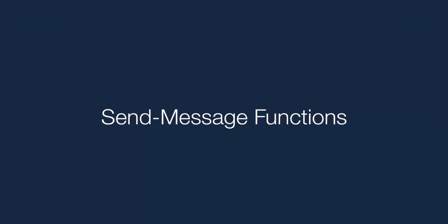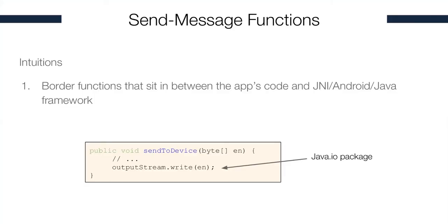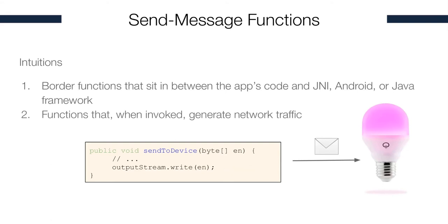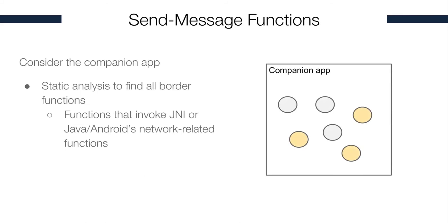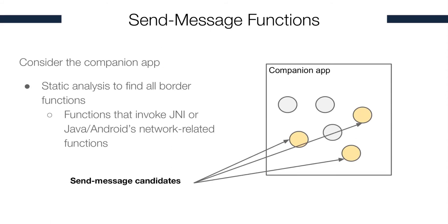The first phase is identifying send message functions. Our method is based on two intuitions. Send message functions are usually border functions that sit between the app's code and interact with Java framework methods. For instance, the code shown on the slide is a border function because it directly interacts with outputstream.write, which is a method in the Java.io package. Another intuition is that these send message functions, when invoked, usually generate network traffic. Based on these two intuitions, we develop a method using a combination of static and dynamic analysis. Given a companion app, we use static analysis to identify all the border functions — basically the functions that invoke JNI or Android network-related functions. Once identified, we mark them as send message candidates.